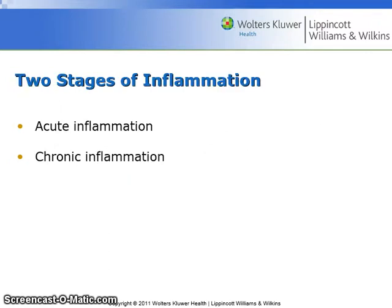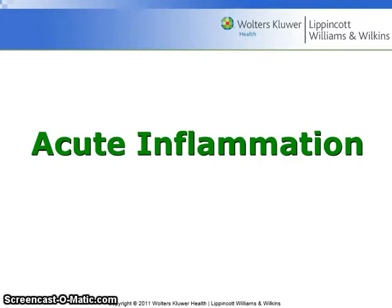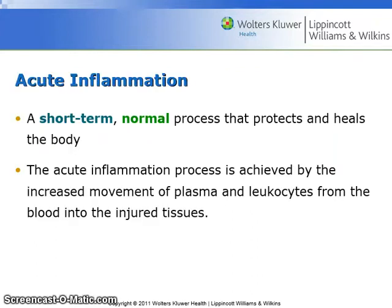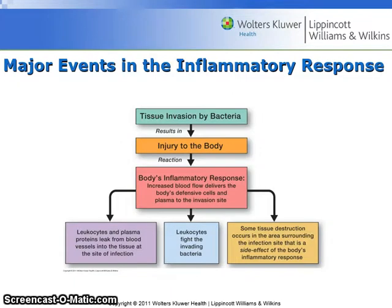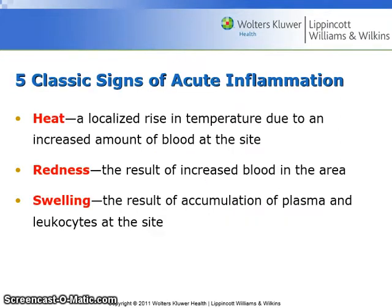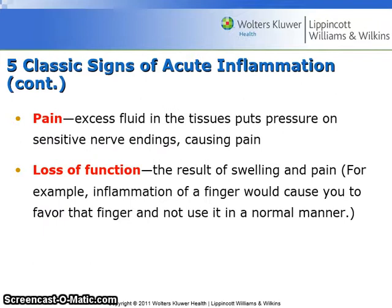There are two stages of inflammation: acute and chronic. Acute inflammation is a short-term normal process that protects and heals the body. The acute inflammatory process is achieved by the increased movement of plasma and leukocytes from the blood into the injured tissues. Five classic signs of acute inflammation include heat, redness, swelling, pain, and loss of function.